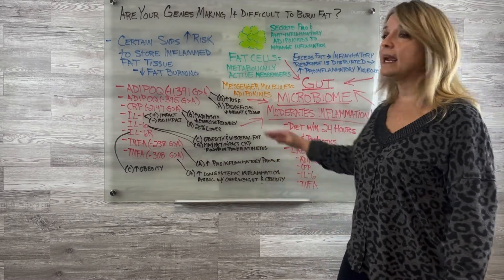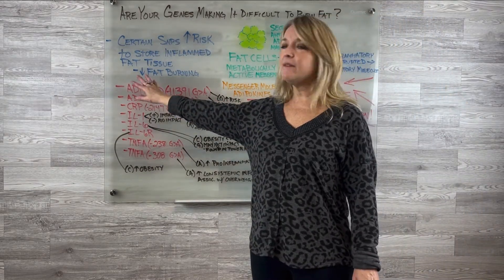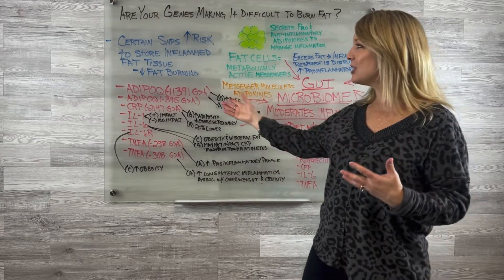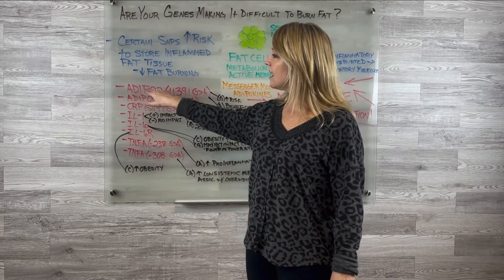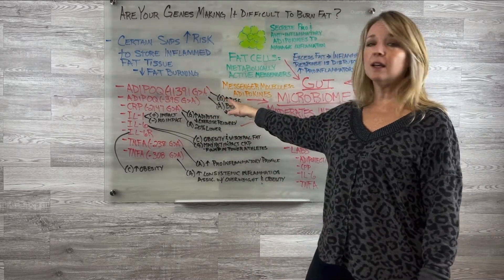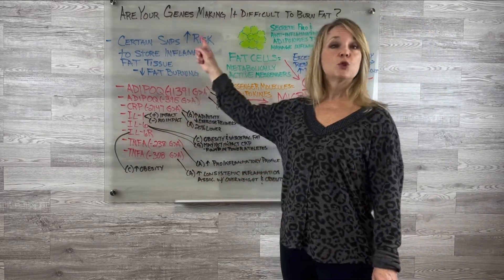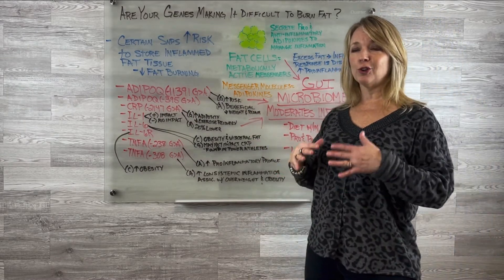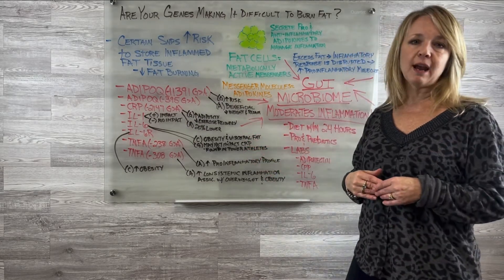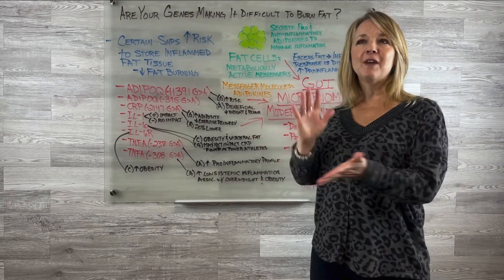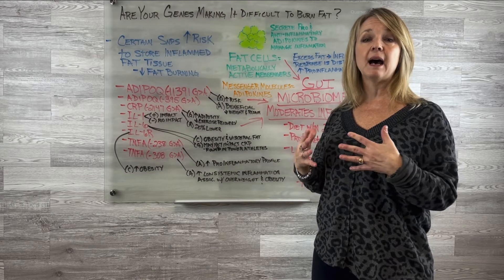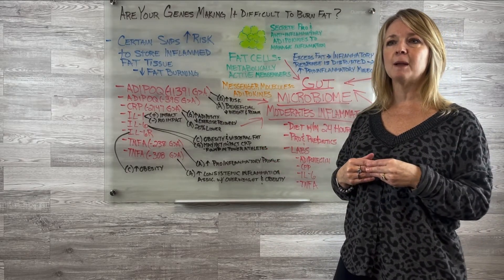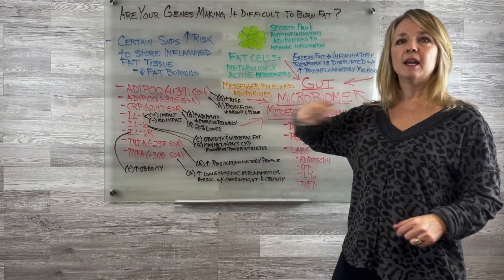You can't just say, oh, I have ADIPOQ, which is the adiponectin C1Q, and it's also associated with collagen. Just because you have this doesn't necessarily mean that it's going to increase your risk and lower your weight loss or increase your weight gain. Just having this genetic SNP, you got to look at the whole picture. It all kind of goes together with your other genes and other SNPs that you are expressing. So this ADIPOQ, which is adiponectin, the G allele, you have an increased risk for storing or not burning fat, whereas the A allele is beneficial and you have lower weight.